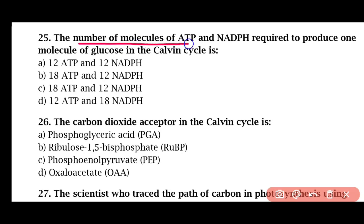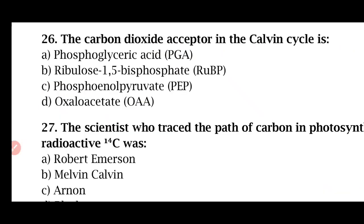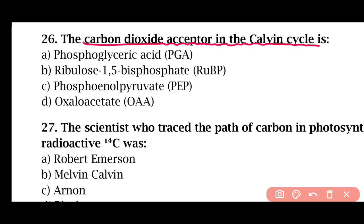Question 25: The number of molecules of ATP and NADPH required to produce one molecule of glucose in the Calvin cycle is — 12 ATP and 12 NADPH, 18 ATP and 12 NADPH, 18 ATP and 12 NADPH, or 12 ATP and 18 NADPH. The correct answer is option C. RuBP (ribulose-1,5-bisphosphate) is the CO2 acceptor in the Calvin cycle.